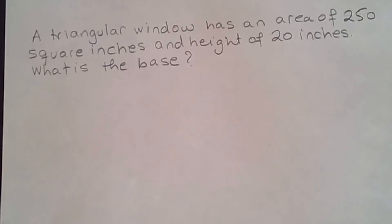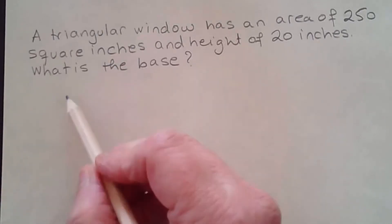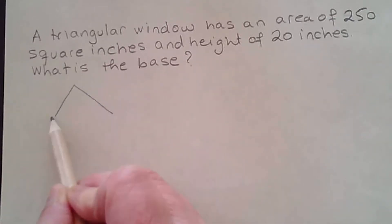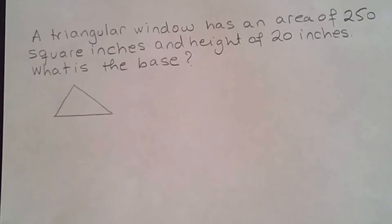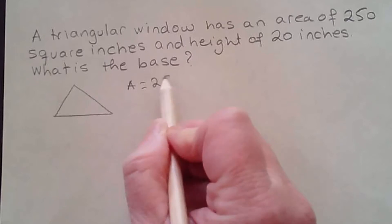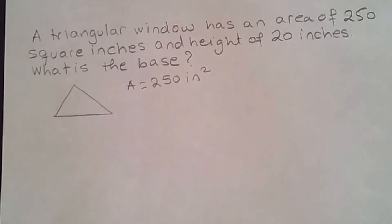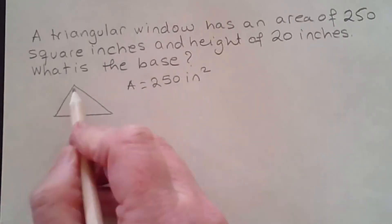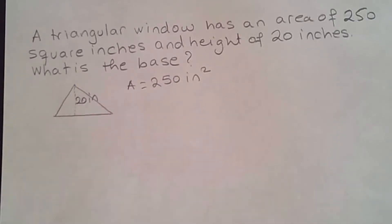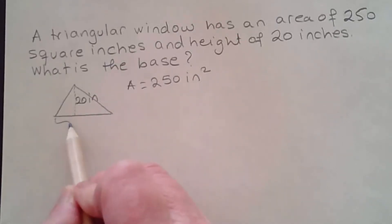A triangular window has an area of 250 square inches and a height of 20 inches. What is the base? So we have a window that has a triangular shape, so graphing it here we have a triangle. They've given me the area of the triangle — that is 250 square inches — and I have a height of 20 inches. Now they want me to find the base.